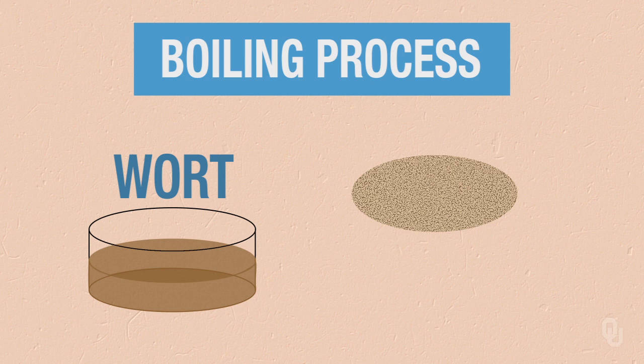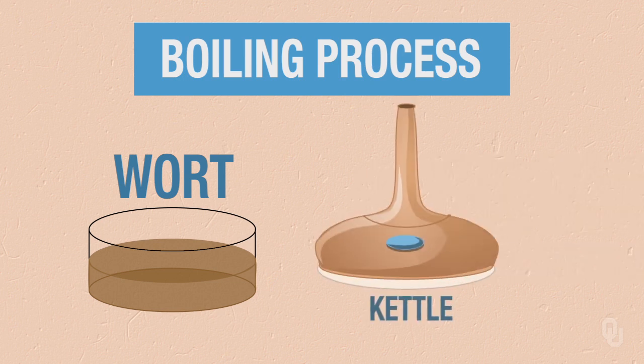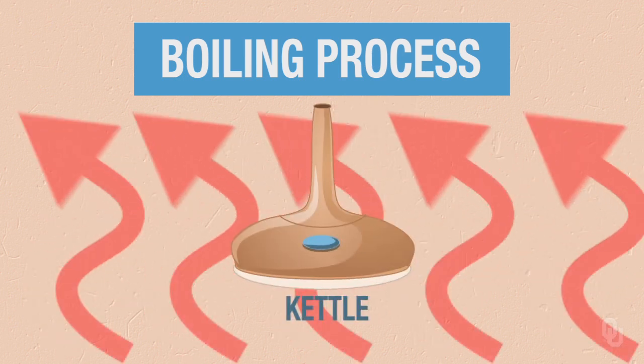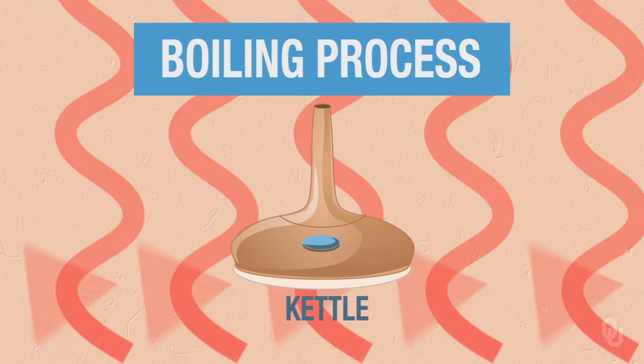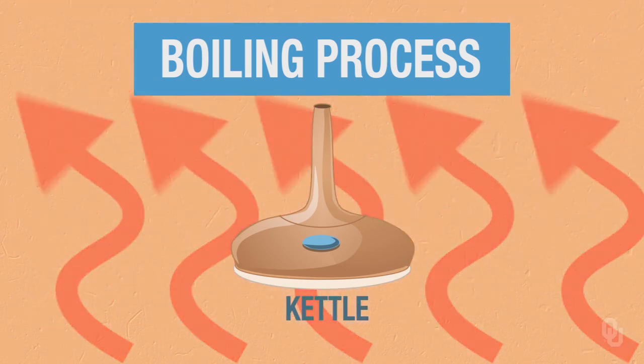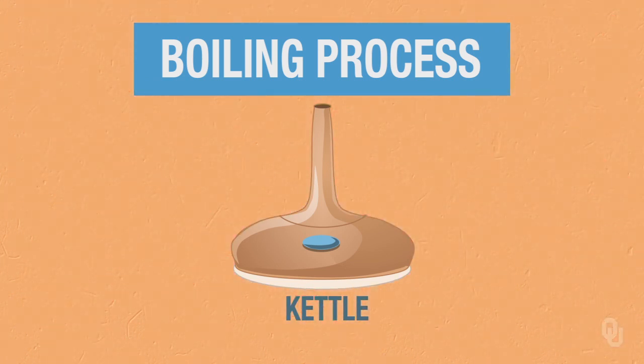The process is as simple as it sounds. We take the wort, once it has been separated from the spent grain, and we start boiling it. During that process, we're going to add the hops, usually towards the end.